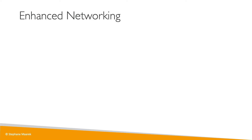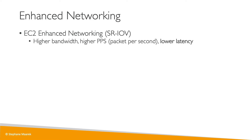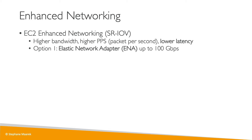Let's talk about enhanced networking — it is a way to get better networking performance for your EC2 instances. We have the type SR-IOV which gives you higher bandwidth and higher PPS (packets per second) with lower latency. There are two options: the most recent is the Elastic Network Adapter (ENA), which gives you performance of up to 100 gigabits per second, or option two is using an Intel VF, up to 10 gigabits per second, which is legacy.